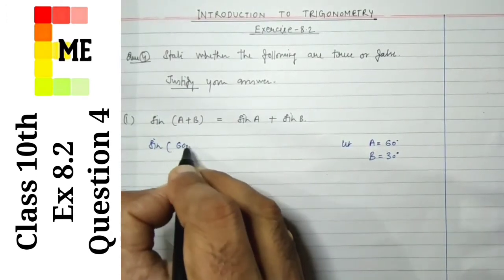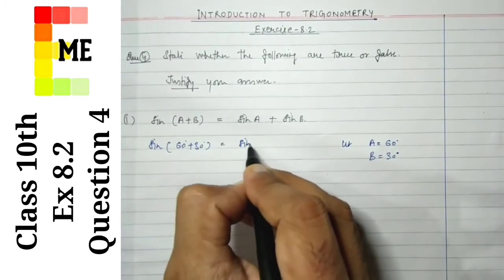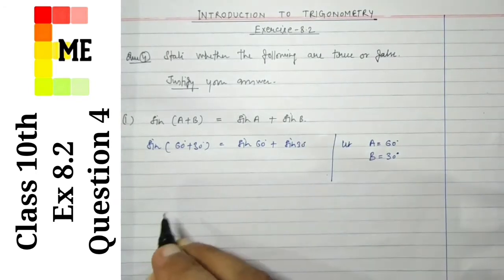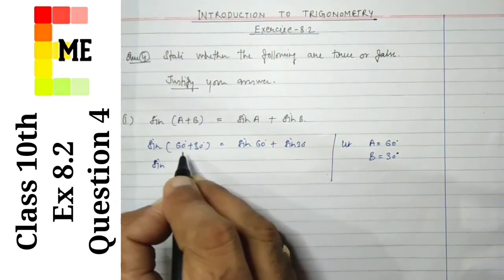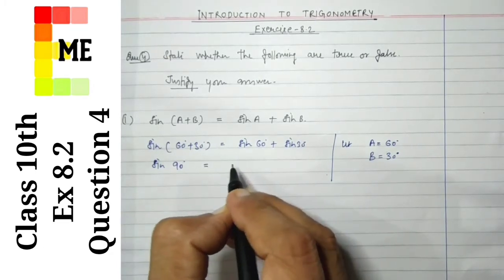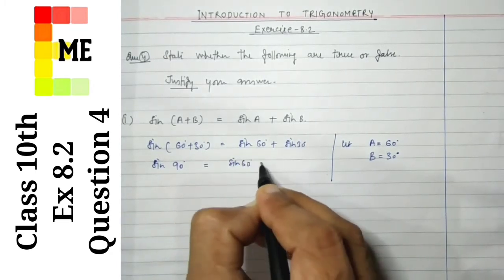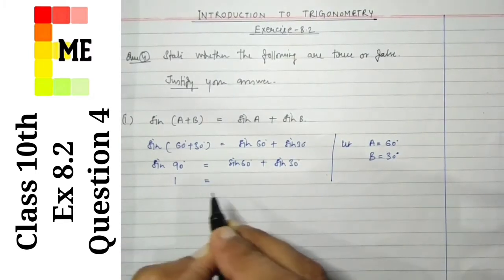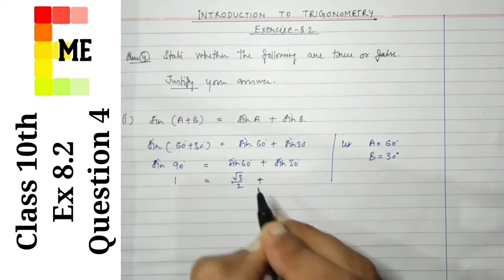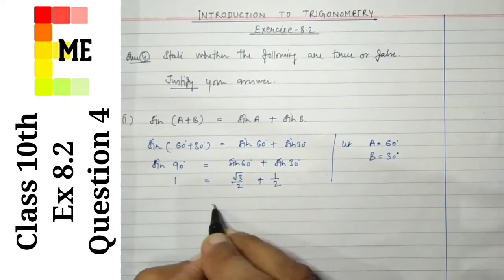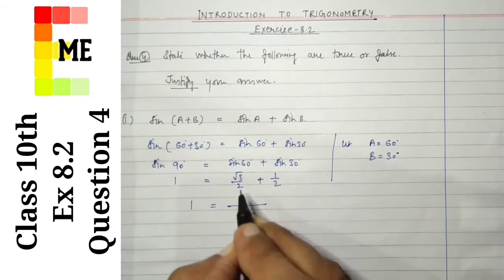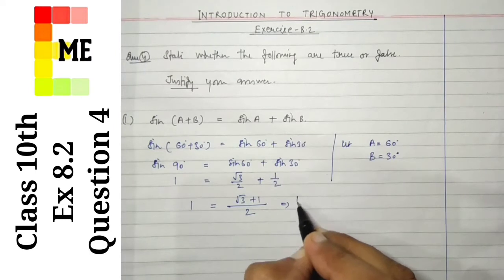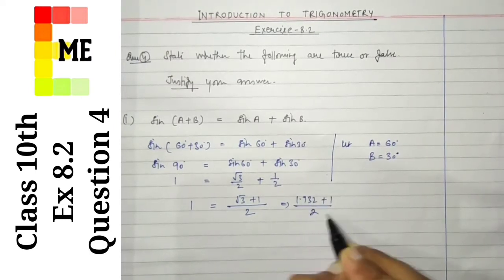Let us put in all the values on the left hand side and right hand side simultaneously. Sin(60° + 30°) = sin 60° + sin 30°. Sin(90°) = sin 60° + sin 30°. Sin 90° is 1, sin 60° is √3/2, and sin 30° is 1/2. Taking the right hand side, √3 + 1 gives us — √3 is 1.732 plus 1, upon 2.